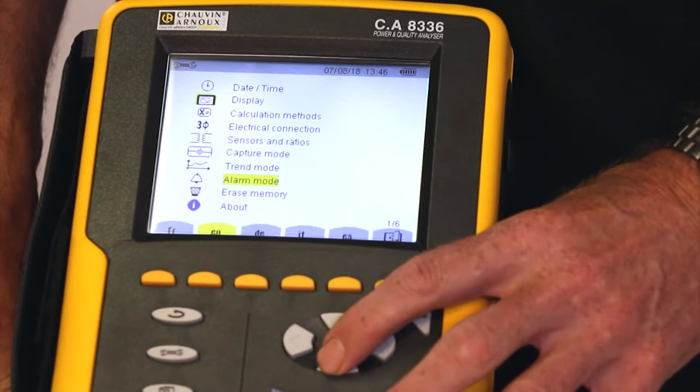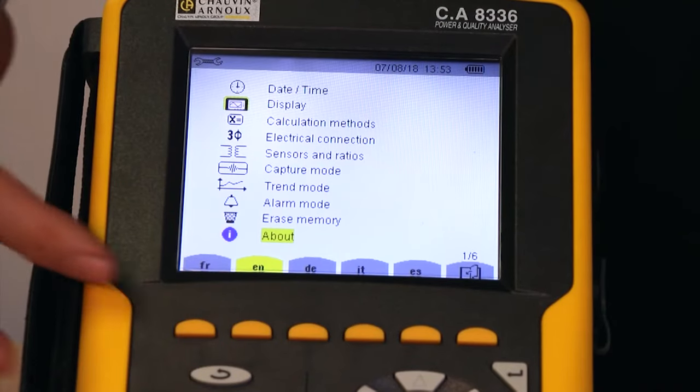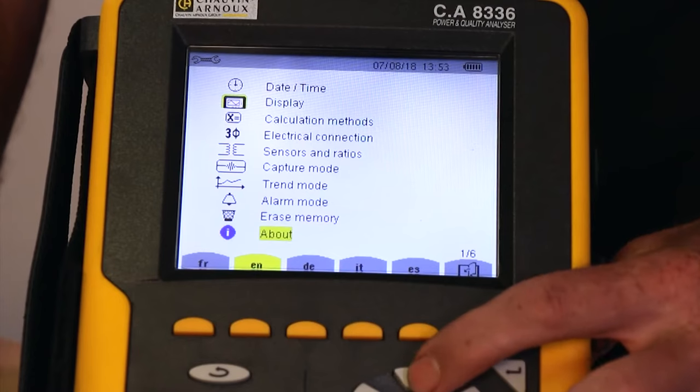We can also erase the memory and check the firmware version of the product. You'll also notice the fast keys, but in this particular mode, you can select the different language options. Setting the date and time, display contrast and calculation methods are all self-explanatory.